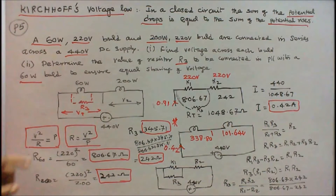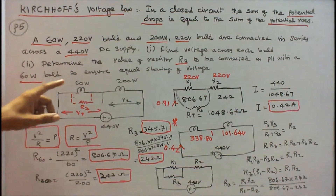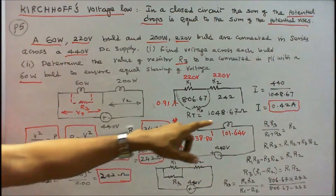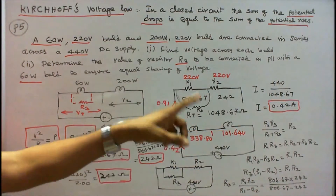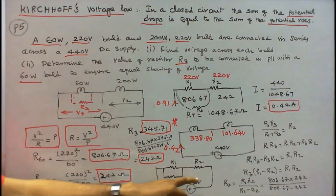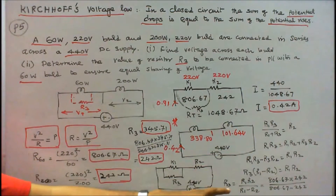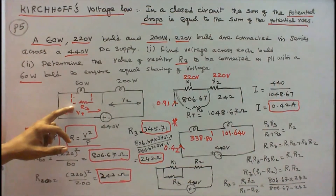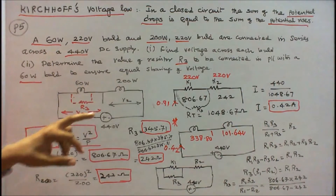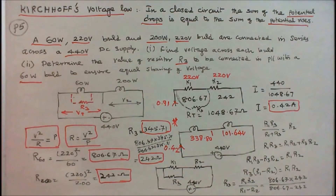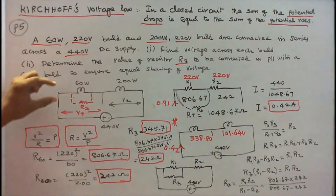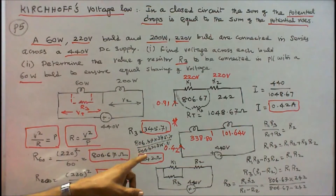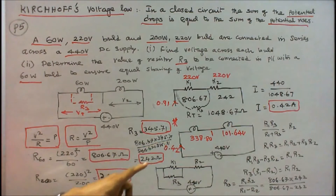Number 2: I have to connect a resistance R3 across the 60W bulb to ensure equal sharing of voltage. When I connect R3, the parallel combination is R1 × R3 / (R1 + R3), and this must equal R2. I know R1 and R2, so simplifying the equation gives R3 = 345.71 ohms. When I connect 345.71 ohms in parallel with R1: (806.67 × 345.71) / (806.67 + 345.71) = 242 ohms.